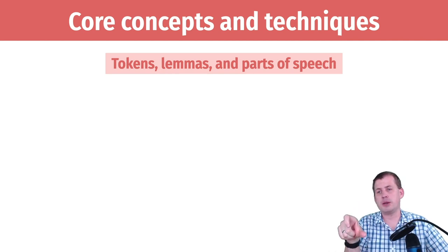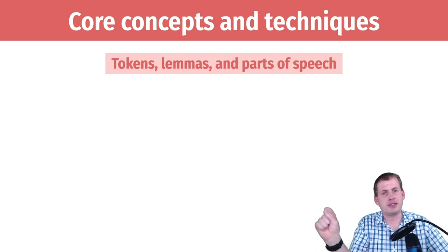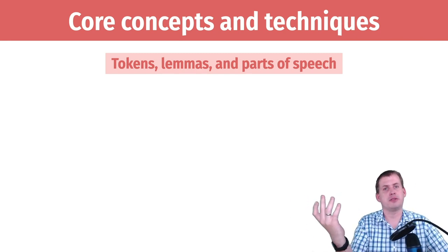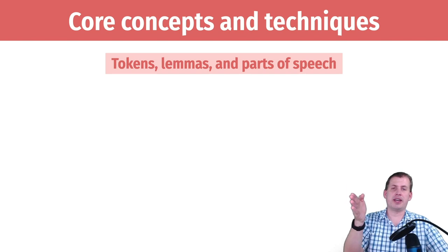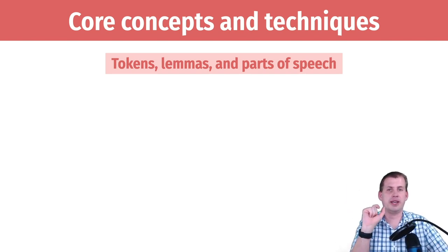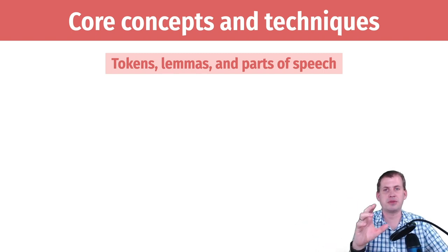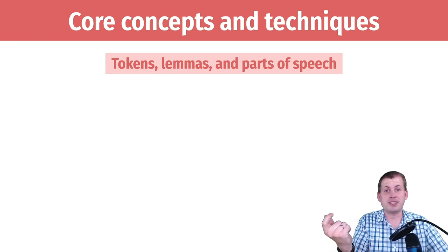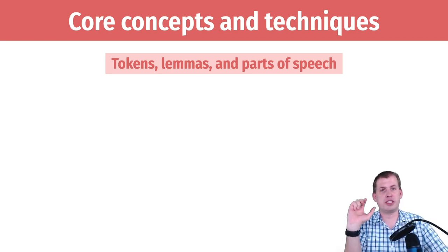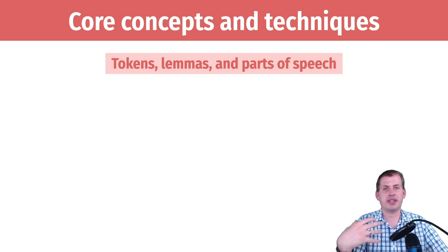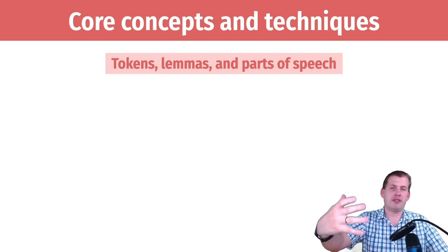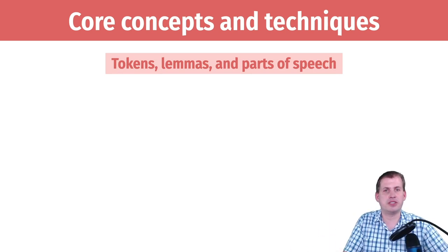We're first going to talk about what tokens, lemmas, and parts of speech are. Parts of speech you may recognize from your English classes in high school — those are like nouns and verbs and adjectives. We can use fancy algorithms to take text and have it categorize all of the words as a noun, adjective, or pronoun using statistical techniques, machine learning, and Bayesian statistics. You can then filter out all the verbs, keep only active or past tense verbs, find just proper names, or find all the adverbs to see how people are acting in a book or in historical archives.